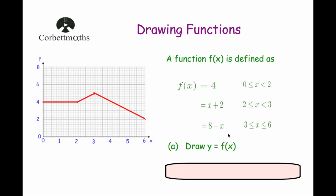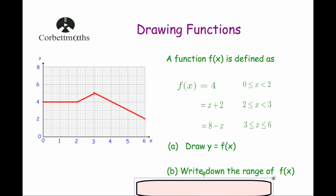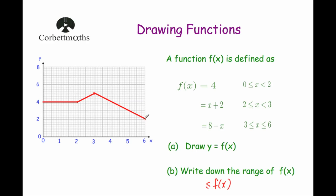Next, part b says write down the range. The range is the outputs — really the heights of the function. Looking at the graph, it reaches a lowest height of 2 and a greatest height of 5. So the range is: f of x is bigger than or equal to 2 but less than or equal to 5.